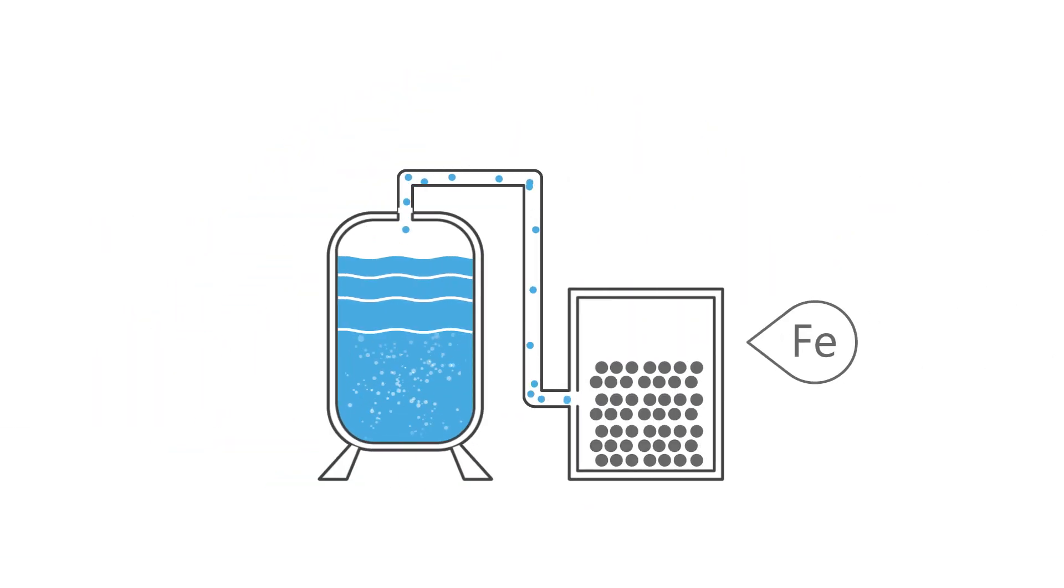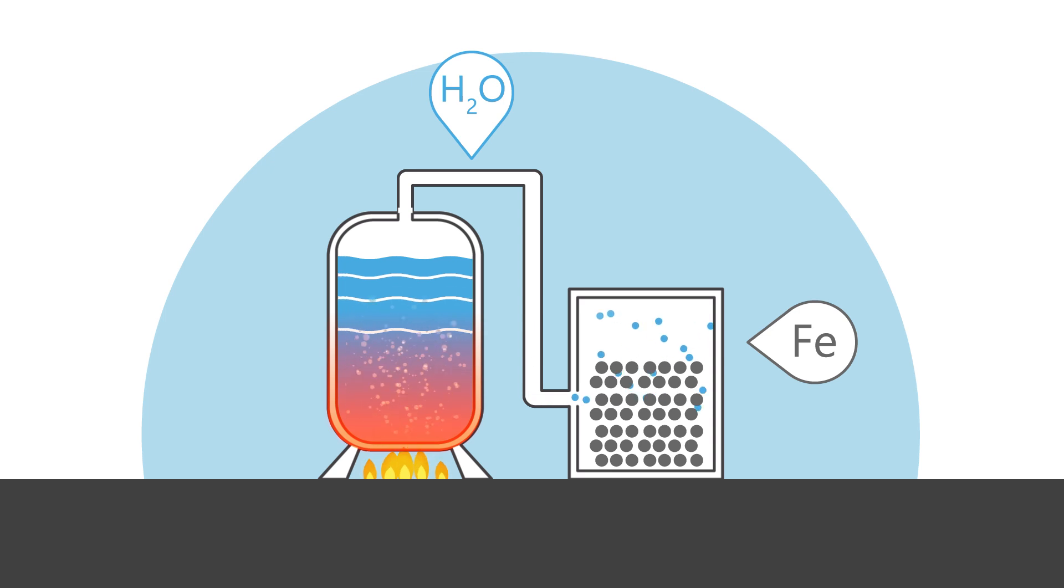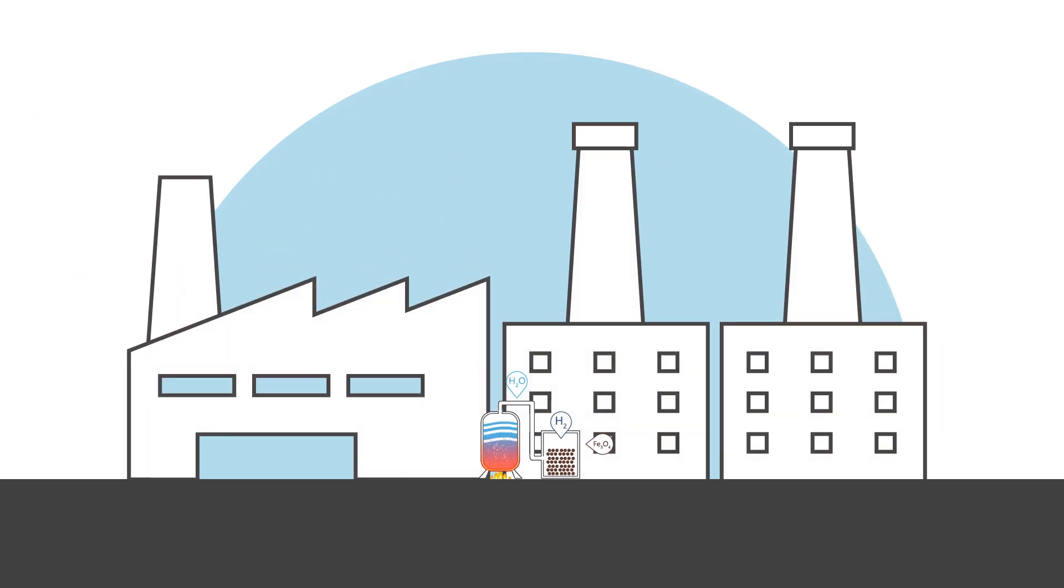When iron is exposed to a flow of hot steam under high pressure, it reacts with the water molecules. This offers the possibility to extract hydrogen, which can then be used as an energy source in the industry.